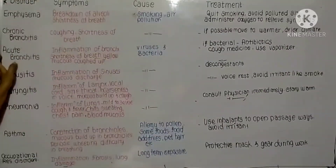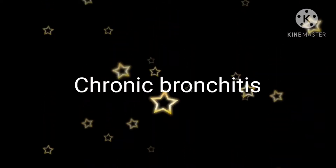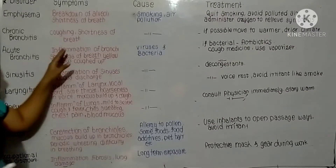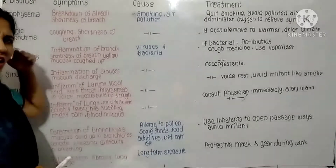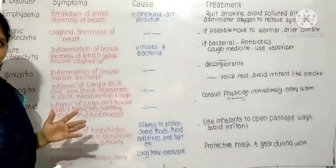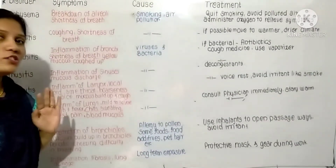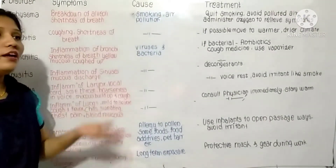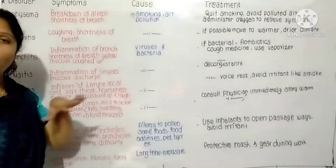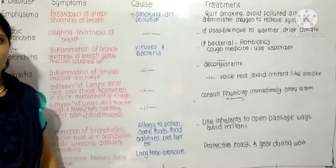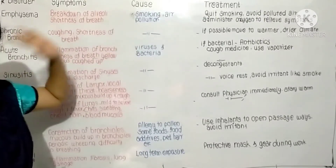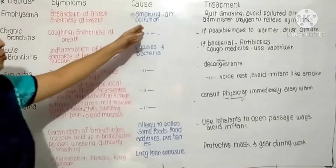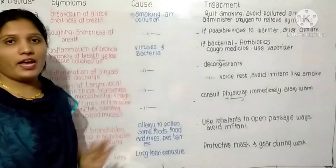The next disorder is chronic bronchitis. The symptoms include coughing and shortness of breath — the person is continuously coughing and cannot take air properly inside the body or throw air outside the body. The causes are the same: smoking and air pollution.